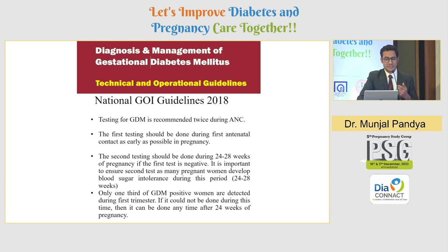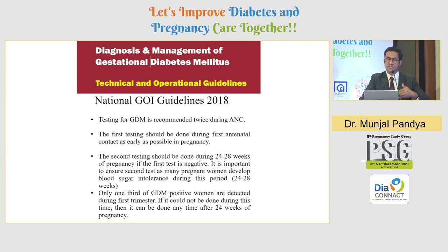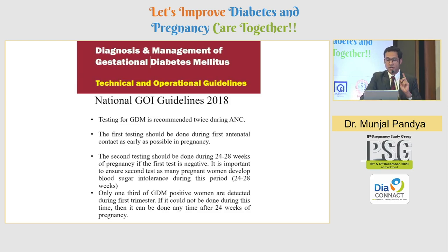National guidelines recommend testing for GDM twice during the antenatal period: first at the earliest possible time, and second between 24 to 28 weeks if the first test is negative. As we saw, insulin resistance increases in the second trimester, which is why the second test is done at 24 to 28 weeks. Only one-third of GDM positive patients are detected in first trimester screening, making the 24-to-28-week window essential.